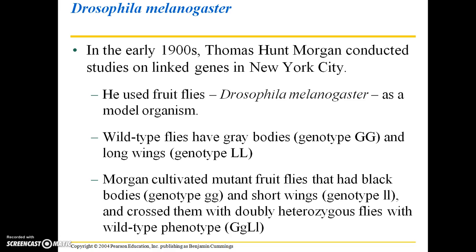Drosophila melanogaster is a model organism that has been used extensively for scientific research, and it's a great model for how linked genes work. In the early 1900s, Thomas Hunt Morgan conducted studies on linked genes in New York City using the common fruit fly, Drosophila melanogaster. The wild-type fly — what you typically see in the wild — has gray bodies, denoted by genotype GG, and long wings, denoted by genotype LL.